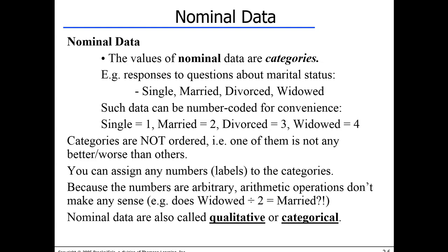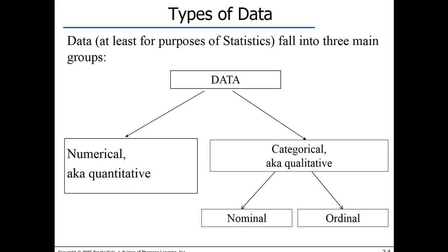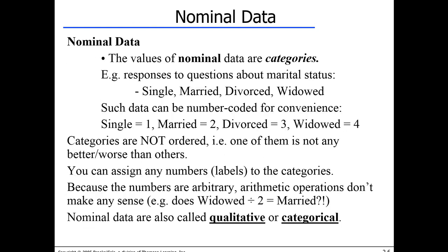The second broad category is categorical, or qualitative data — simply not numbers. Categorical data can be of two types: nominal or ordinal. Let's start with nominal. A nominal variable is one where we can assign a numerical value, but that numerical value is random. For example, marital status: people can be single, married, divorced, or widowed. I could go on the street and ask random people their marital status.